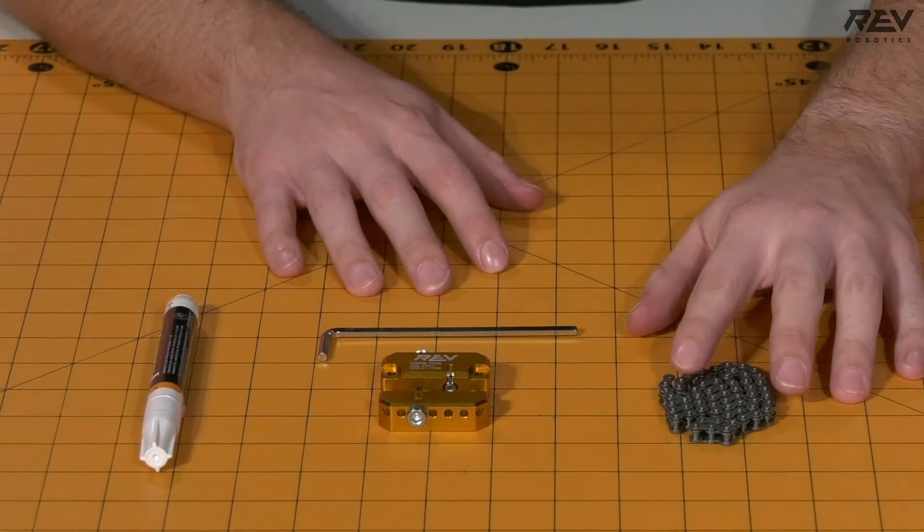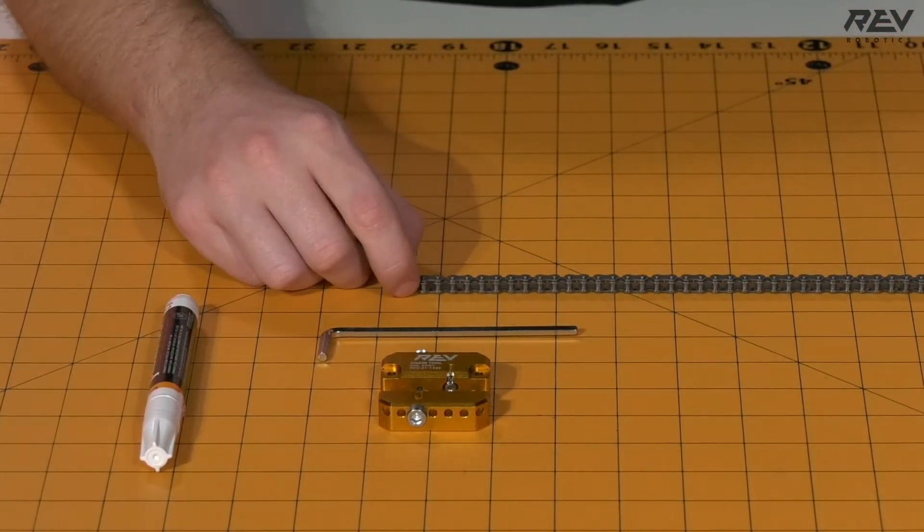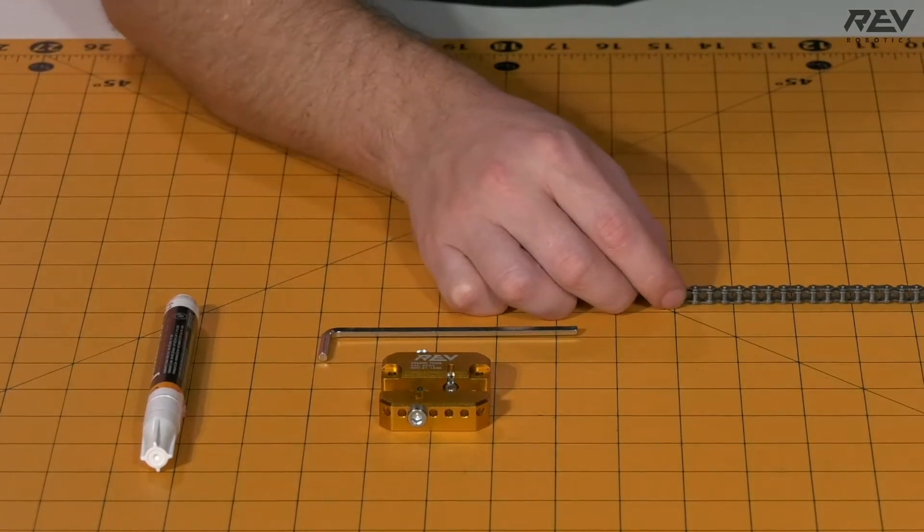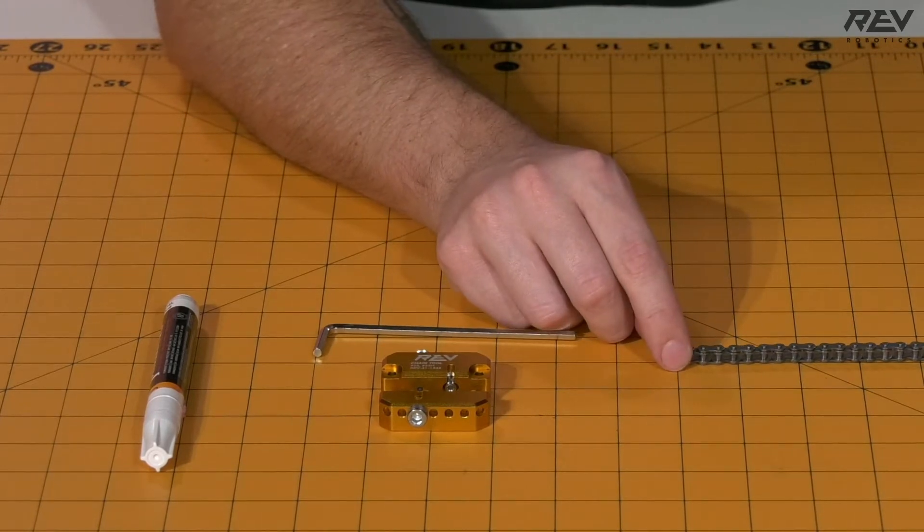So with that, let's start by taking our chain and we need to be able to measure out the length. So for this build, we need to have chain links that are 56 links long. 56 links is approximately 14 inches.